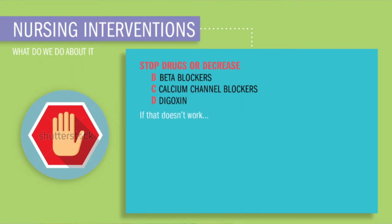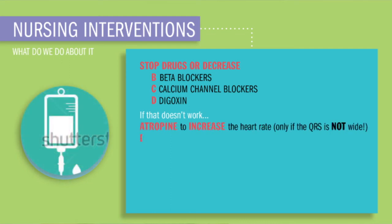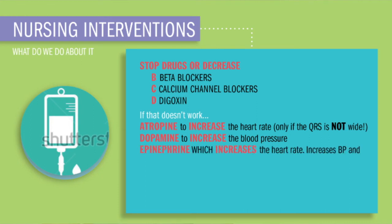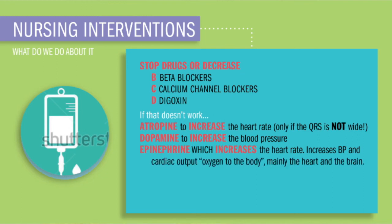If that doesn't fix the problem, then we'll stimulate that AV node by giving it atropine to increase the heart rate, dopamine to increase the blood pressure, and epinephrine to increase both the heart rate and BP by vasoconstricting — basically squeezing down those blood vessels, kind of like toothpaste — which increases cardiac output, basically that oxygen to the body, mainly to the vital organs like the heart and also the brain.